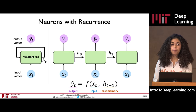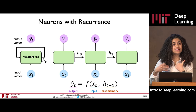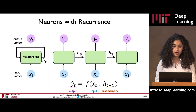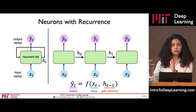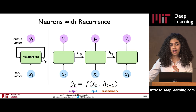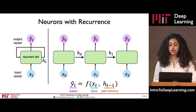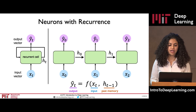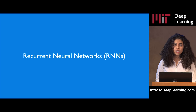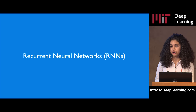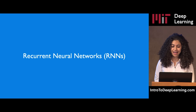This output y of t is a function of both the current input and past memory. The past memory captures the prior history of what has occurred previously in the sequence. We can define and describe these neurons in terms of a recurrence relation. On the right, you can see how we visualize individual time steps as being unrolled, extended across time. But we could also depict this same relationship via a cycle on the left, which highlights this concept of a recurrence relation.